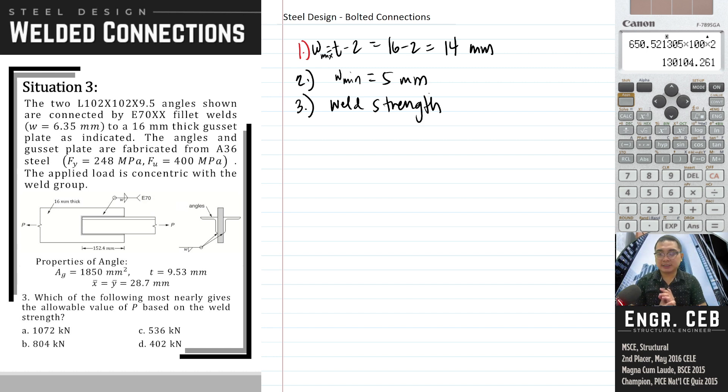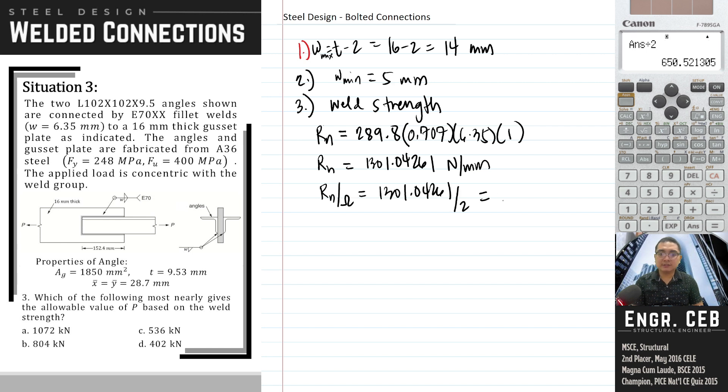For weld strength, we have Rn equals 289.8, which we completed earlier, times rho thickness, 0.707 times 6.35 times 1. For allowable value, we're in ASD, so we divide by the factor of safety. This is 650.521 N/mm.